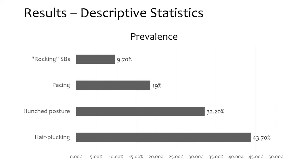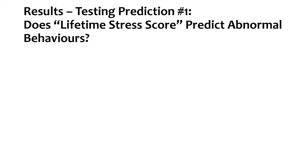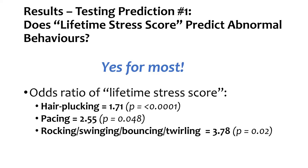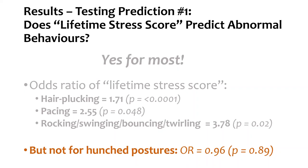Overall, self-directed hair plucking was the most prevalent abnormal behaviour, shown in approximately 44% of monkeys, followed by hunched postures in 32%, pacing in 19%, and rocking stereotypic behaviours in less than 10%. Does the lifetime stress score predict abnormal behaviours? Yes, for most: a unit increase in lifetime stress score significantly increased the odds of hair plucking by 1.71, pacing by 2.55, and the rocking subcategory by 3.78, controlling for age, sex, and facility. More lifetime stress is correlated with higher odds of seeing these behaviours. However, this was not the case for hunched postures.